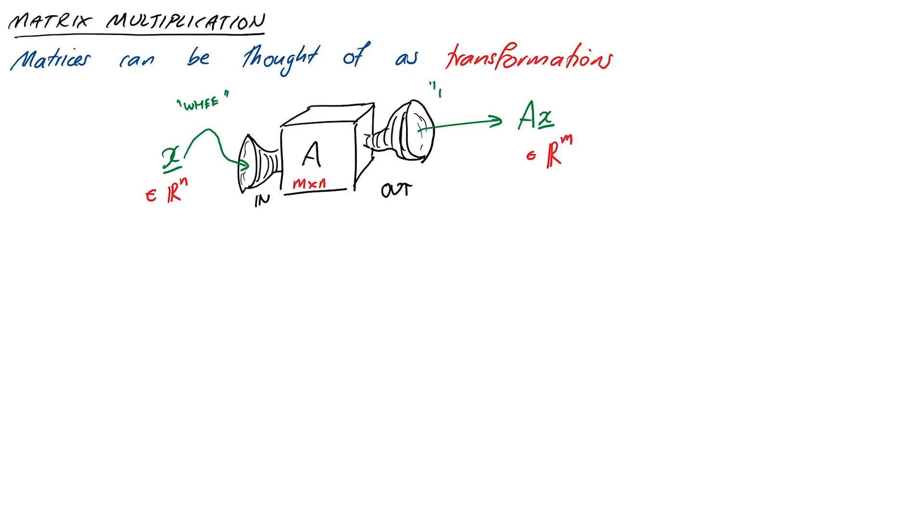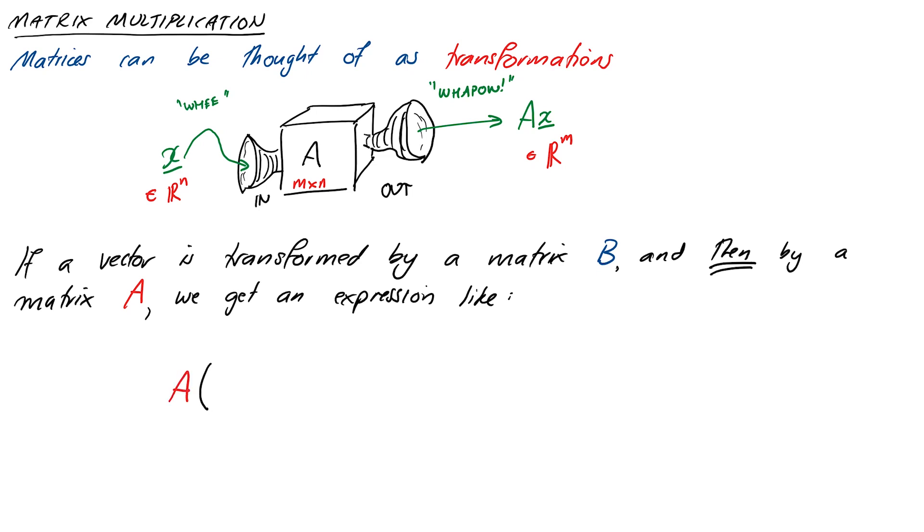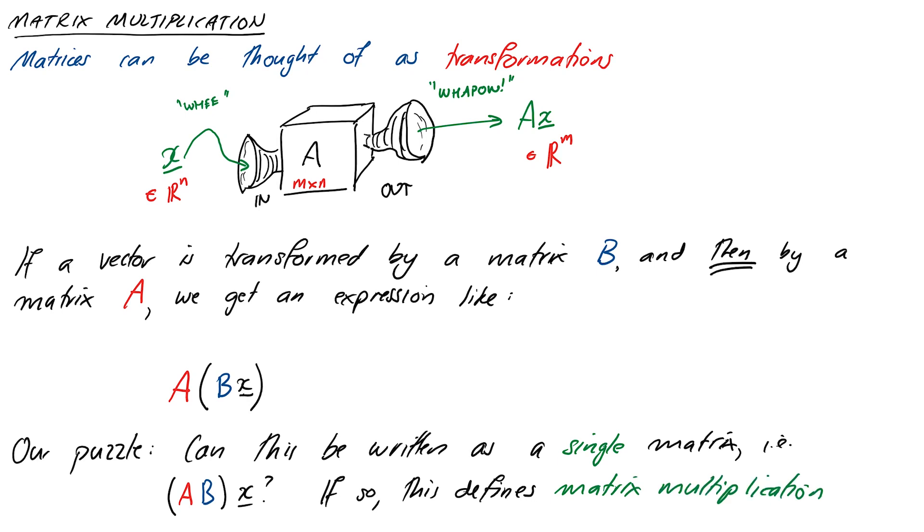We can think of matrix A as something that takes in a vector X and produces another vector Y. In a sense, our matrix has transformed X into Y. What we want to understand is: if matrix B transforms vector X, and then matrix A transforms the result, we get A(BX) = ABX. Can AB be written as a single matrix? If it can, that will define our matrix multiplication.